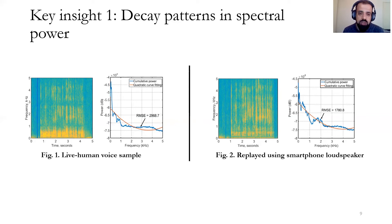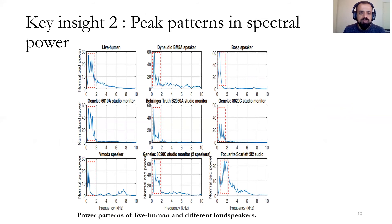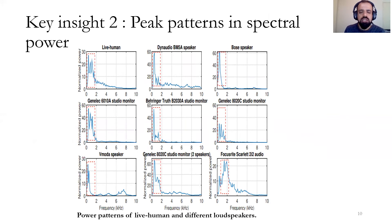Experimentation with more than 11 built-in speakers from different vendors shows similar characteristics. There is another key insight about peak patterns in spectral power. Live human voice shows more peaks compared to loudspeaker output, and loudspeaker signals are more indeterministic or hard to predict. However, in the live human case, the peak patterns are more predictable and show similar structure — characteristics that can be used for detecting live voice.